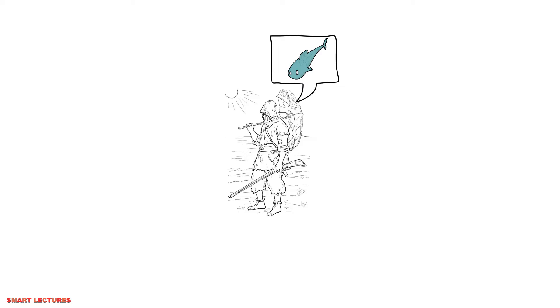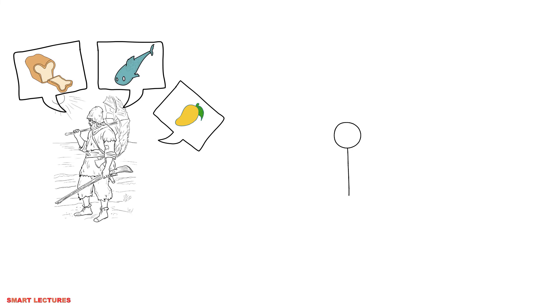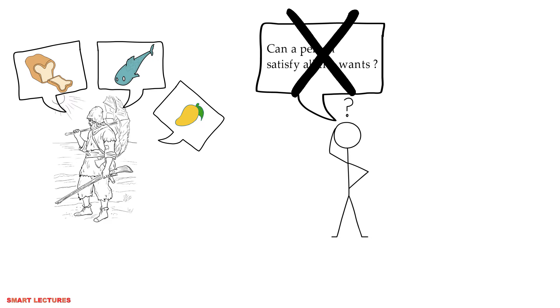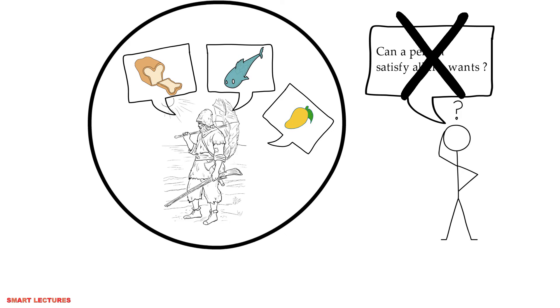Every person has got many wants, so he has to consume many goods. Now the question is can a person satisfy all the wants? The answer is no, because the person cannot have unlimited goods to satisfy his wants. Because the resources are limited.